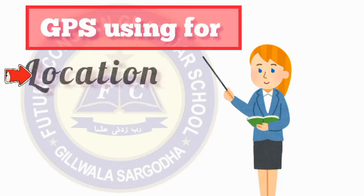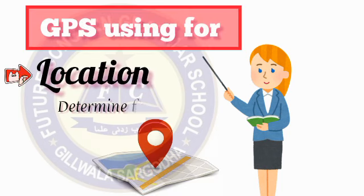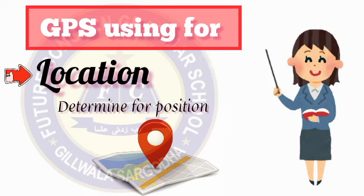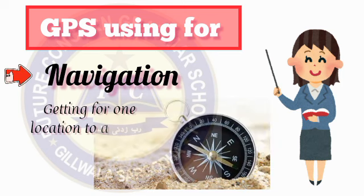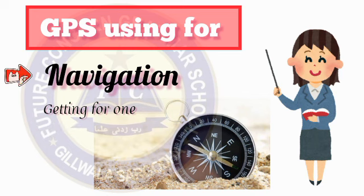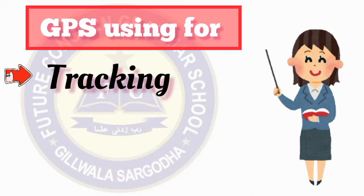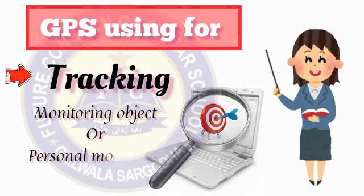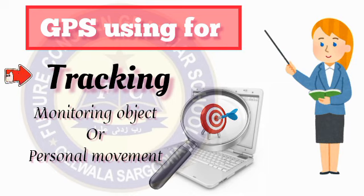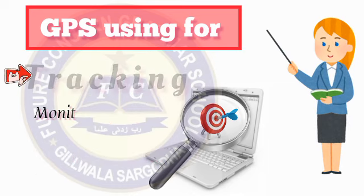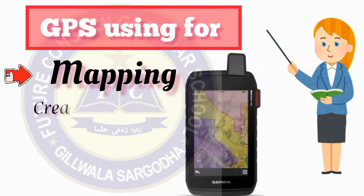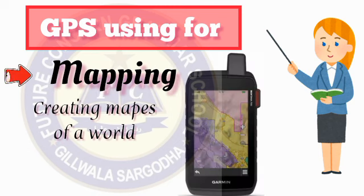GPS is used for: location determination and positioning; navigation, getting from one location to another; tracking, monitoring object or personal movement; and mapping, creating maps of the world.